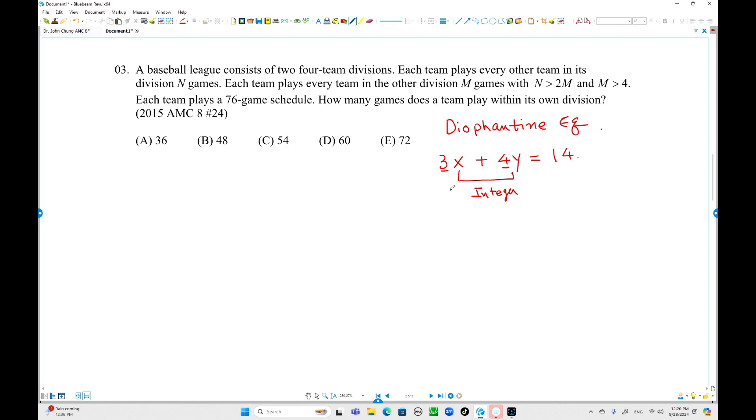If they said positive integer, you can see that if x is 2, y is 2, that equals 14. We have only one equation with two variables. Without this constraint, there are so many solutions because x and y can be any real numbers. The line looks like this way. Any point on this line will be the solution.